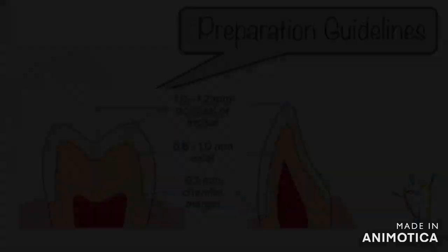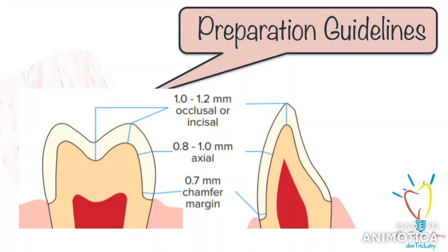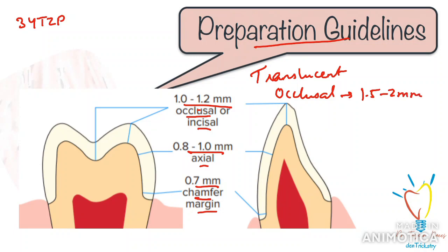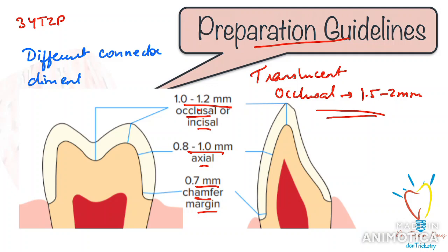Preparation guidelines for these three types of zirconia crowns also vary. For 3Y-TZP, the occlusal reduction is 1 to 1.5 mm, axial reduction is 0.8 to 1 mm, and the gingival margin can be a heavy chamfer of at least 0.6 to 0.8 mm. For translucent and high-translucent zirconia — 4Y-TZP or 5Y-TZP — occlusal or incisal reduction ranges from 1.5 to 2 mm. For anteriors, more incisal reduction gives the technician more freedom to improve translucency. Connector dimensions for bridges vary from 12 mm² for high-translucent and translucent materials, compared to 7 to 9 mm² for 3Y-TZP.